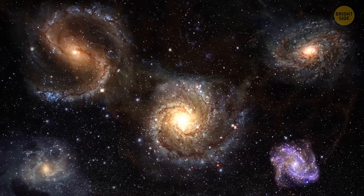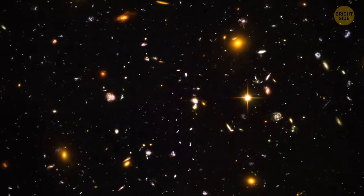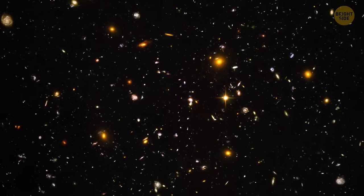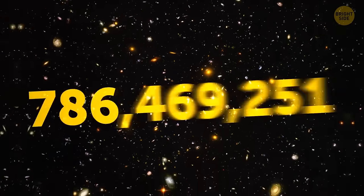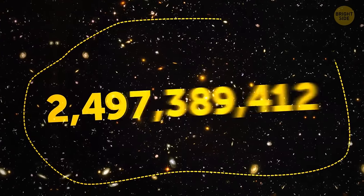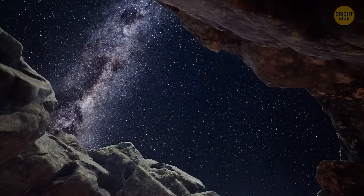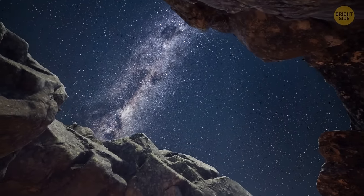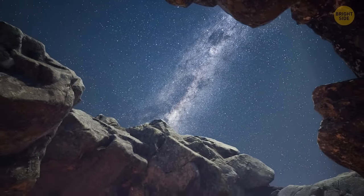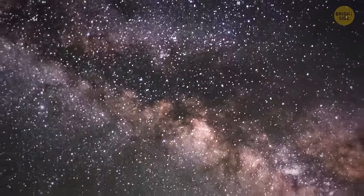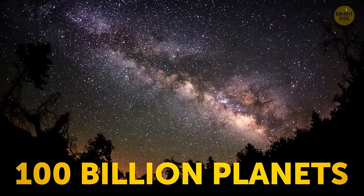Scientists believe that there are at least a couple of billion galaxies out there. We don't know the real number, and probably never will, but they tried to calculate it by counting how many galaxies we can see in a pretty small and restricted area of the sky. It may seem as if the universe was filled with stars and a couple of planets here and there, but our home galaxy has at least 100 billion planets.